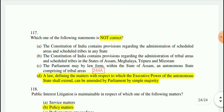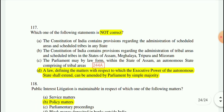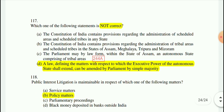Question 117: Which one of the following statements is not correct? Option D is wrong: a law defining the matter with respect to which the executive power of autonomous states shall extend can be amended by Parliament by simple majority — that is not correct.